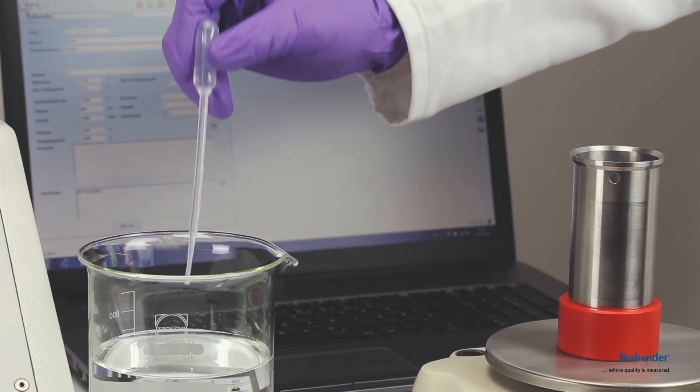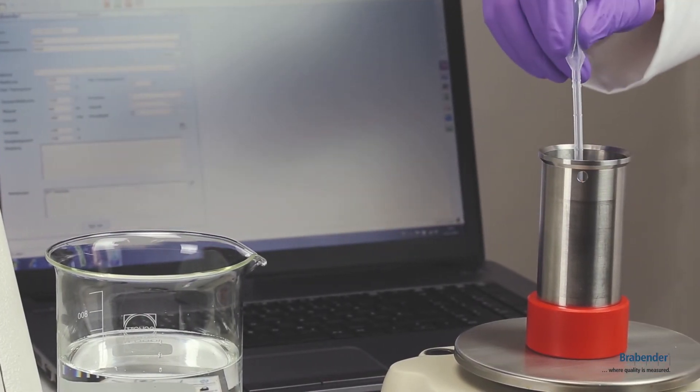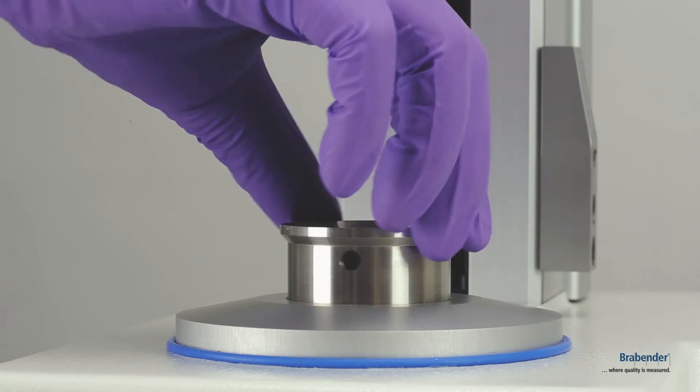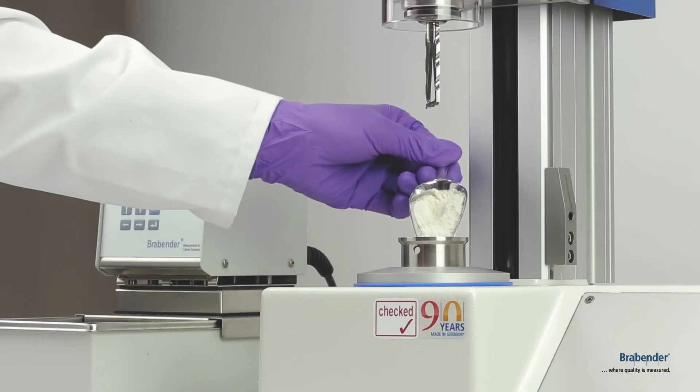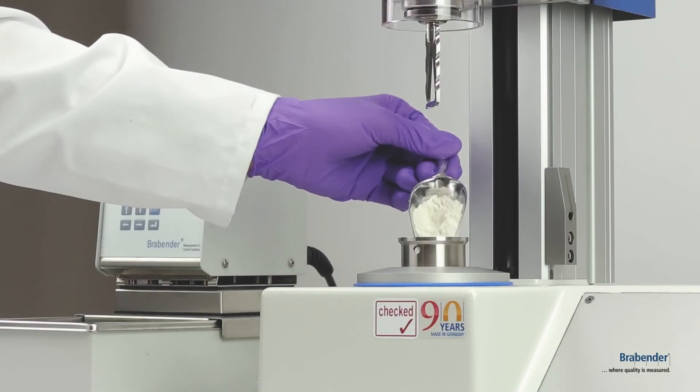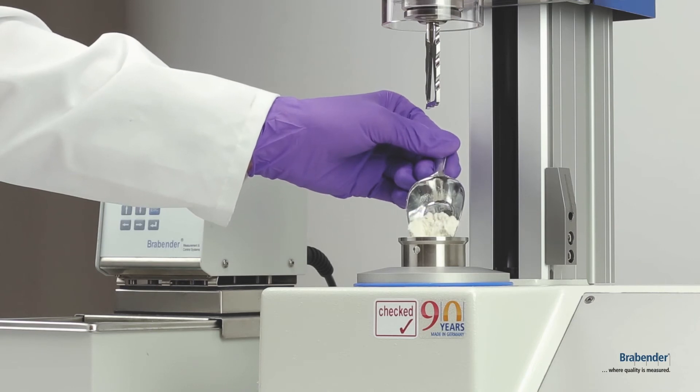Fasten the paddle. Weigh 10 grams of distilled water in the sample pot. Fit the sample cup into the device.